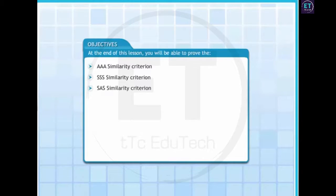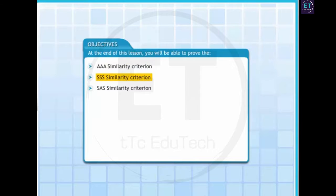At the end of this lesson, you will be able to prove the AAA, the SSS, and the SAS similarity criterion of triangles.